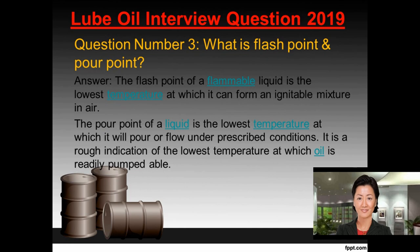Question number three: What is flash point and pour point? Answer. The flash point of a flammable liquid is the lowest temperature at which it can form an ignitable mixture in air. The pour point of a liquid is the lowest temperature at which it will pour or flow under prescribed conditions. It is a rough indication of the lowest temperature at which oil is readily pumpable.